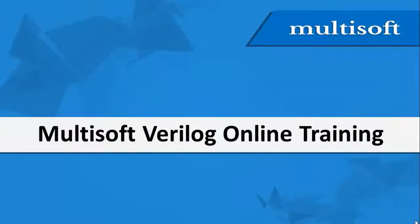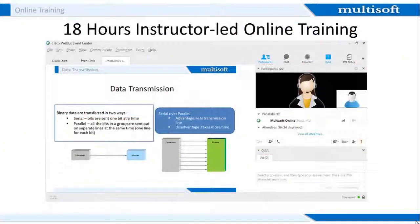With that, let us move on to understand how online training will happen at Multisoft. When you register with us for the training, we will connect with you as per the pre-decided time and impart training for 18 hours in all. For the exact schedule and each session's duration, you can refer to the training calendar on our website. The training happens through a secure web conferencing tool that allows a real-time learning experience. Once you register, we send out event links wherein you log into a collaborative platform that allows two-way interaction between the student and the trainer through webcam and voice chat.